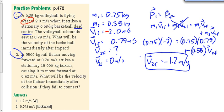All right, let's have a look at question number two. This one says a 9,500 kilogram rail flatcar moving forward at 0.7 meters per second strikes a stationary 18,000 kilogram boxcar, causing it to move forward at 0.42. What's the velocity of the flatcar immediately after collision if they fail to connect? No funny units here. I don't think there's any funny directions, everything's forward. That's good.